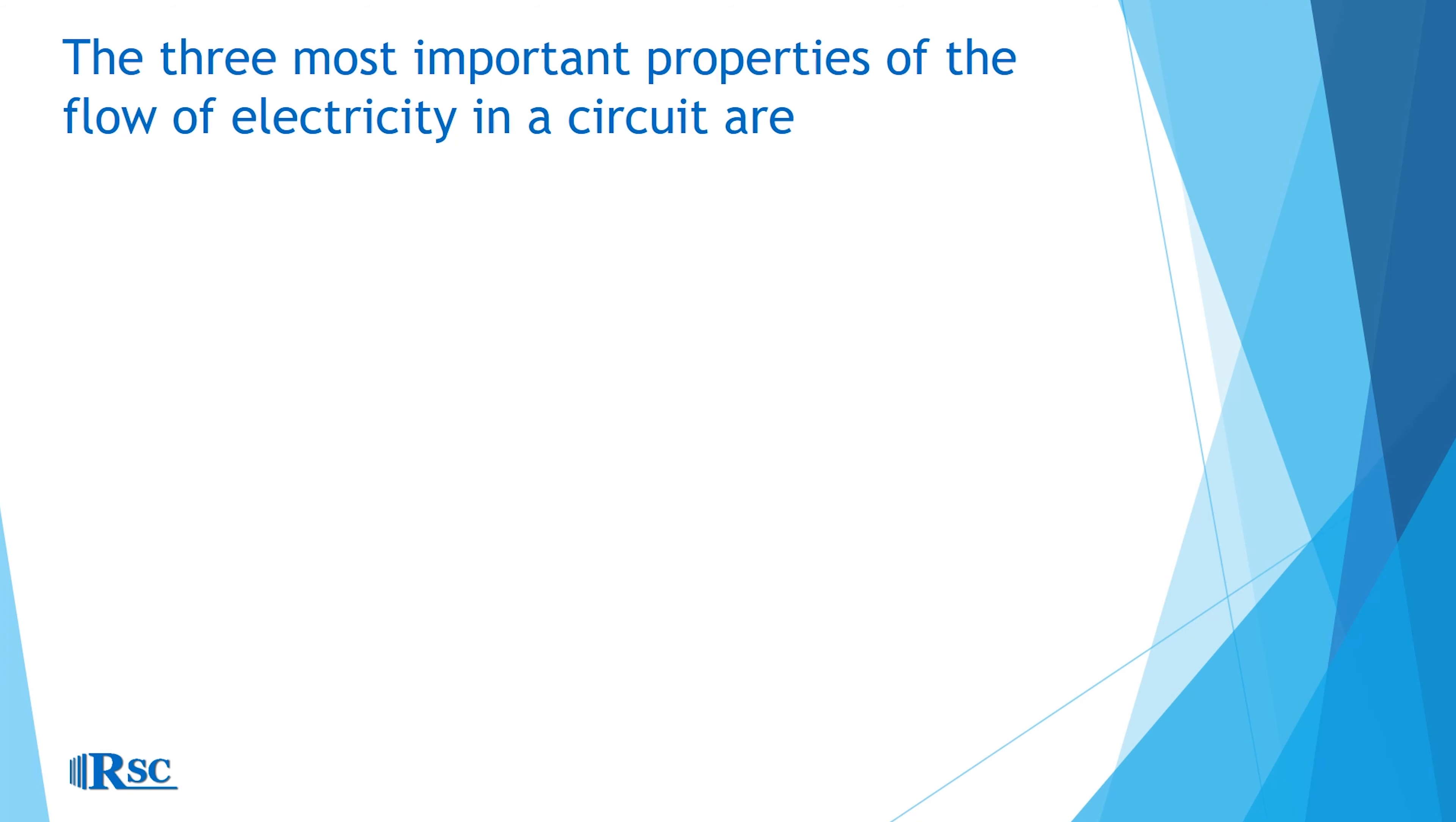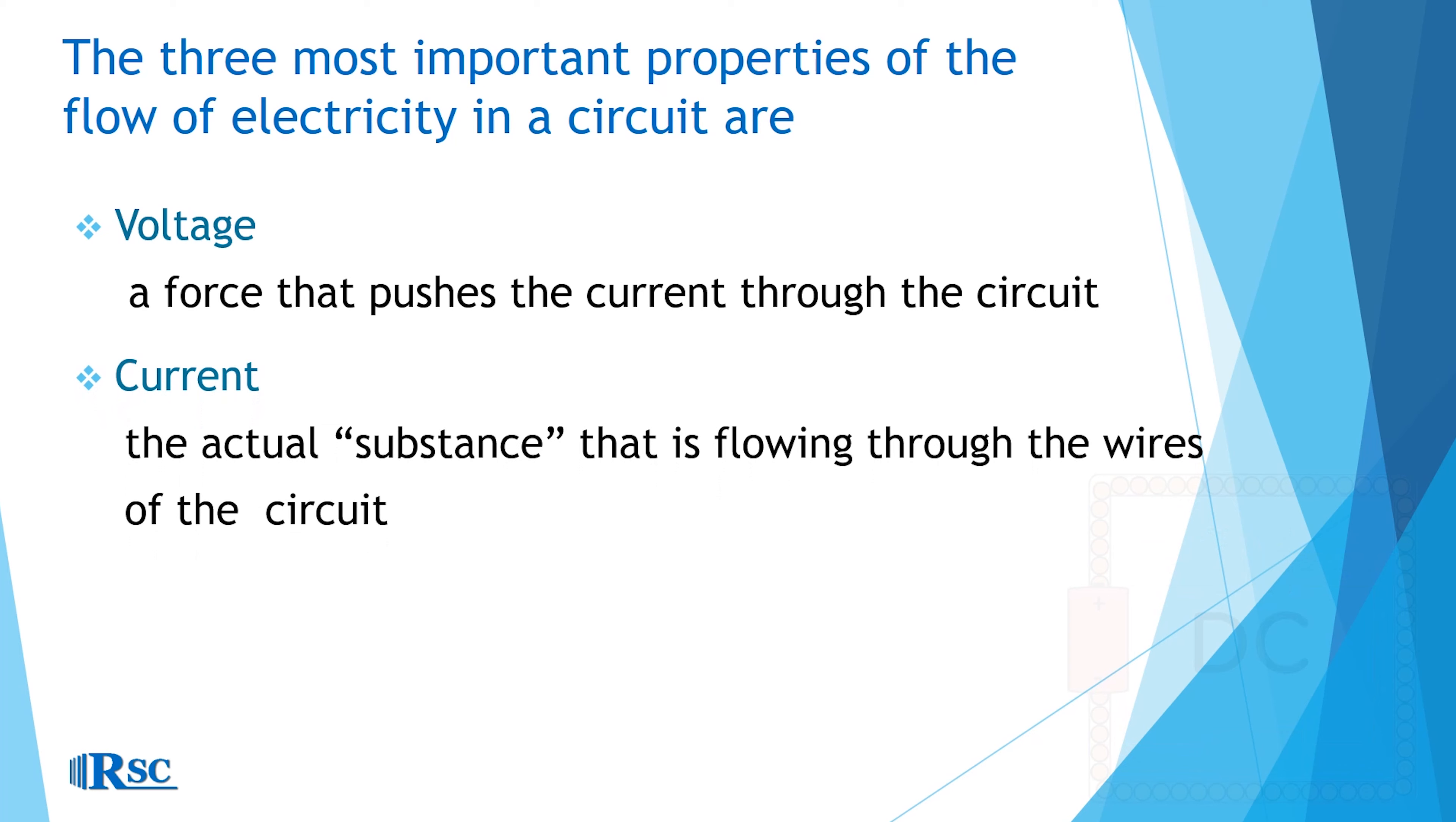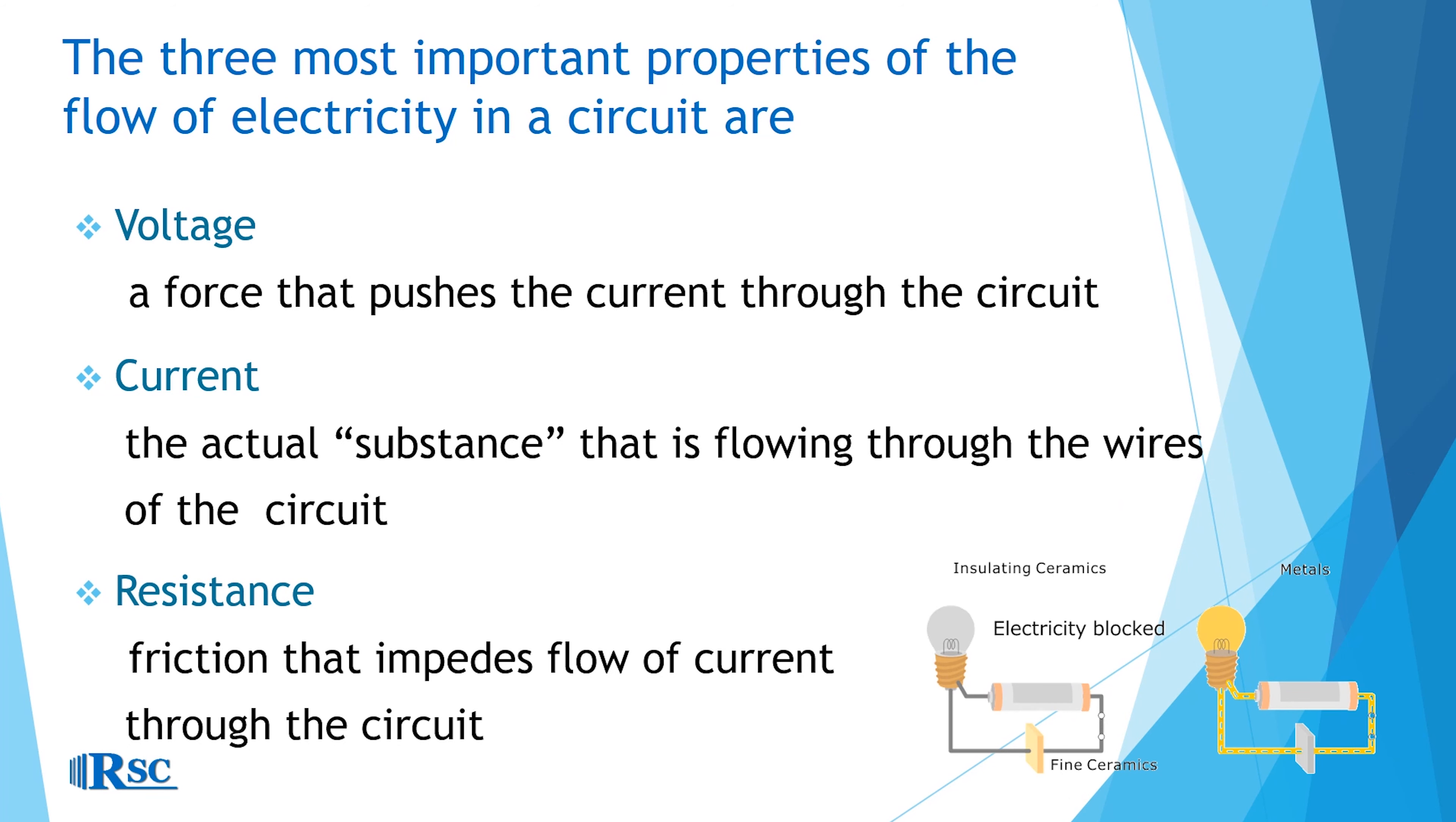Now let's learn the three most important properties of the flow of electricity in a circuit. There's voltage, which is a force that pushes the current through the circuit. There's current, which is the actual substance that's flowing through the wires of the circuit. And there's resistance, which is friction that impedes the flow of current through the circuit.